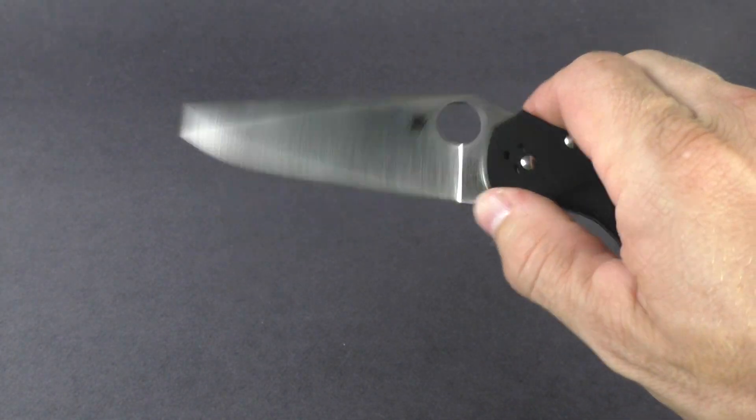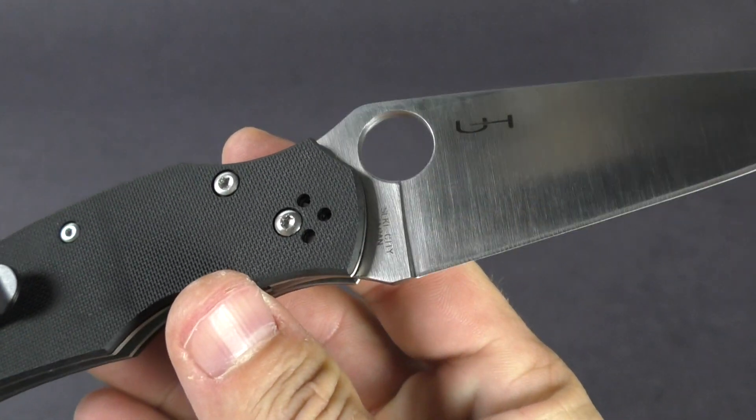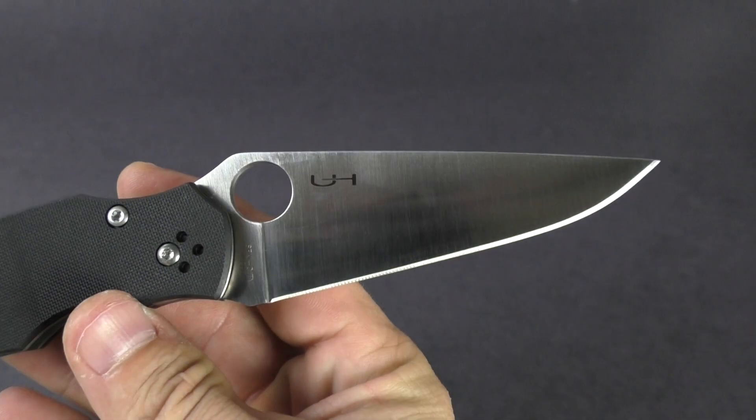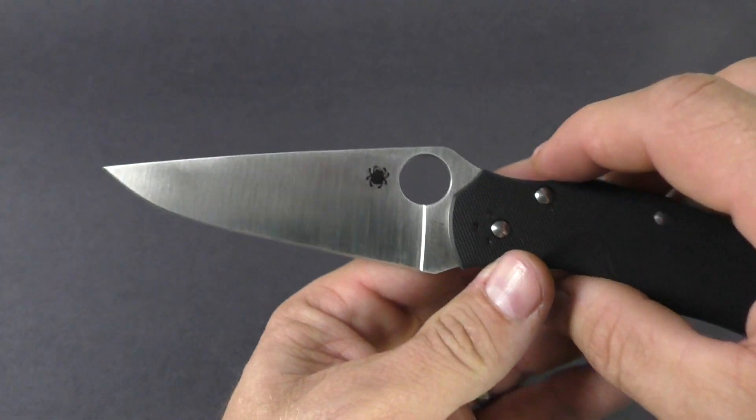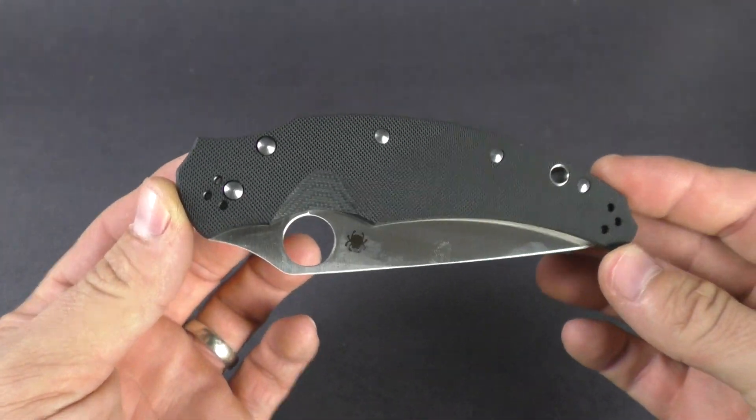The blade is a full flat grind blade. It is made out of S30V blade steel and is three and three-quarters of an inch long. So nice size knife, closed length on it is five inches.